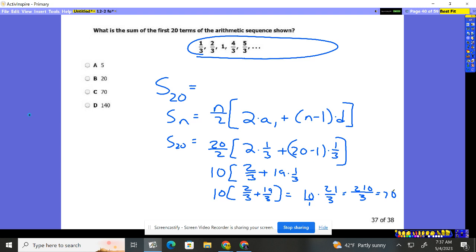Which again, 21 divided by three. This was sort of silly. So that's just a seven. So either way you get an answer of what? 70.